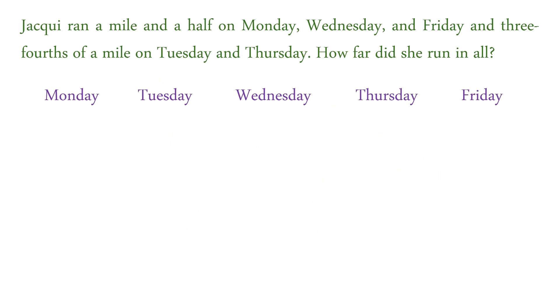So it's given that Monday, Wednesday, and Friday, she ran a mile and a half. So that's one and a half. And then on Tuesday and Thursday, it's three-fourths of a mile.